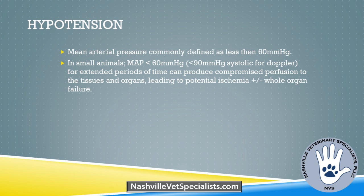How does this tie into hypotension? With the mean arterial pressure less than 60, for extended periods of time, it can produce compromised perfusion — meaning organs aren't getting all the blood flow they need. When they wake up, overall body function could be decreased and organ failure can occur. This ties in because anesthetics provide a primary cause of hypotension, so blood pressure monitoring provides important insight into anesthetic depth as well as overall body function.